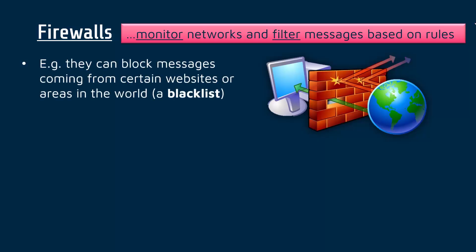For instance, a firewall might be set up to block messages coming from certain websites. Administrators can set a list of websites they don't want connecting to their network, or cast a wider net — maybe blocking certain areas of the world. For example, if you've got a competitor in a certain country and you want to be safe, you can block all messages from that country.